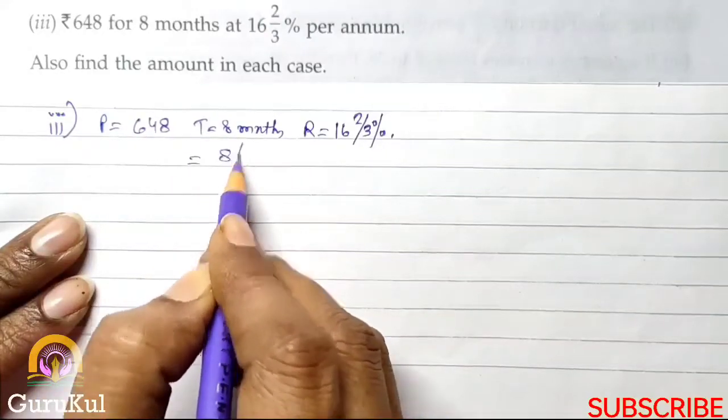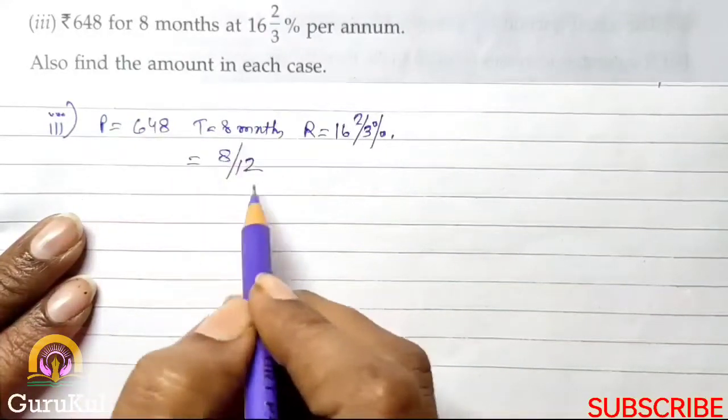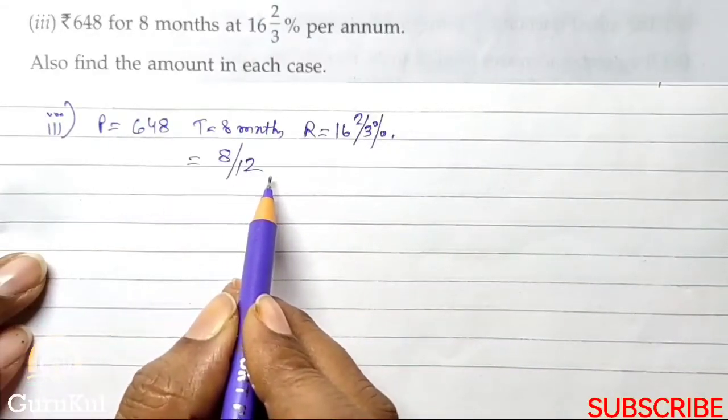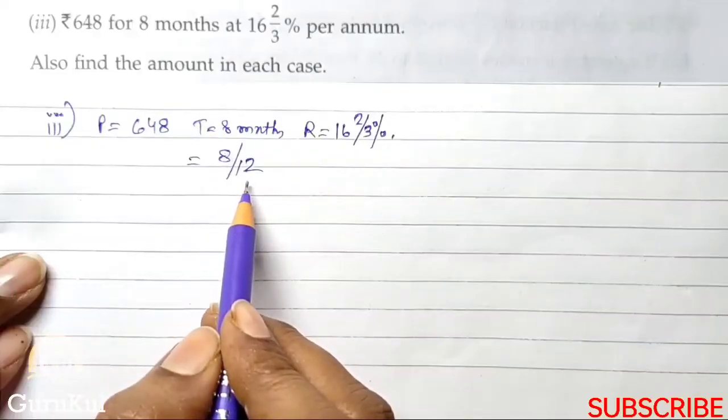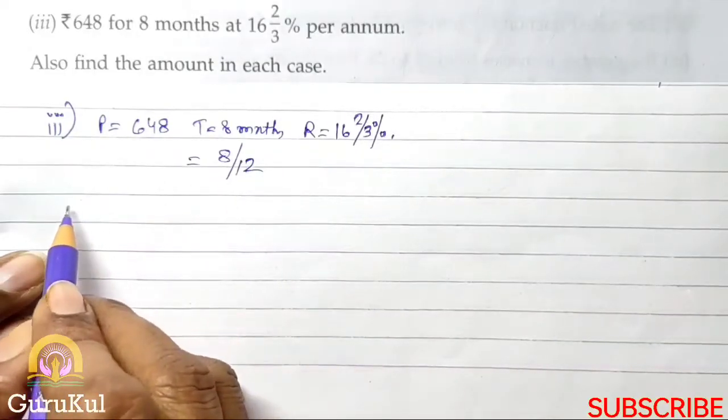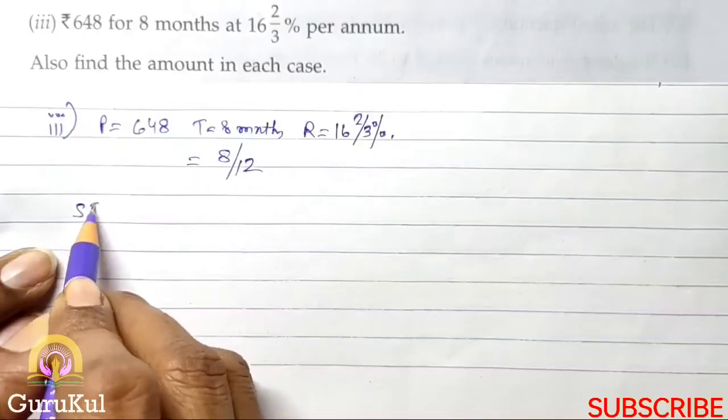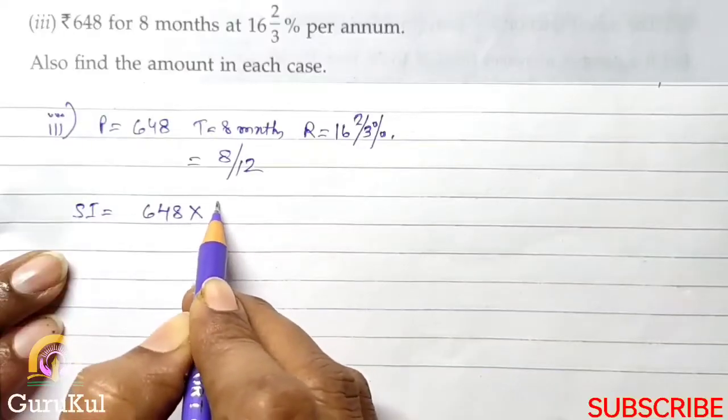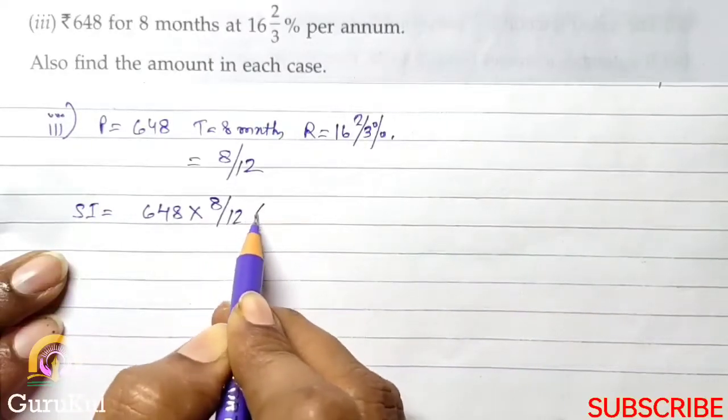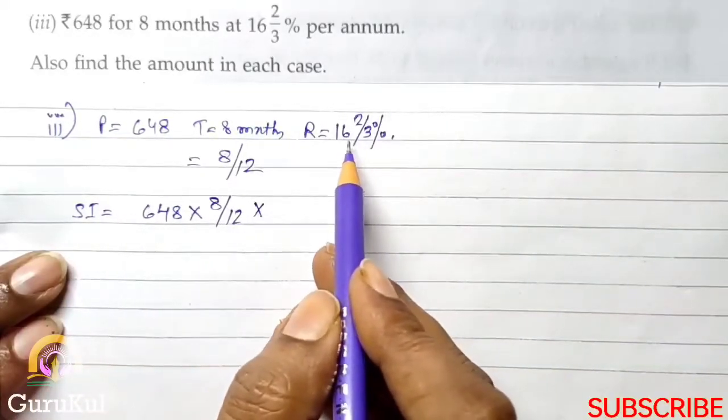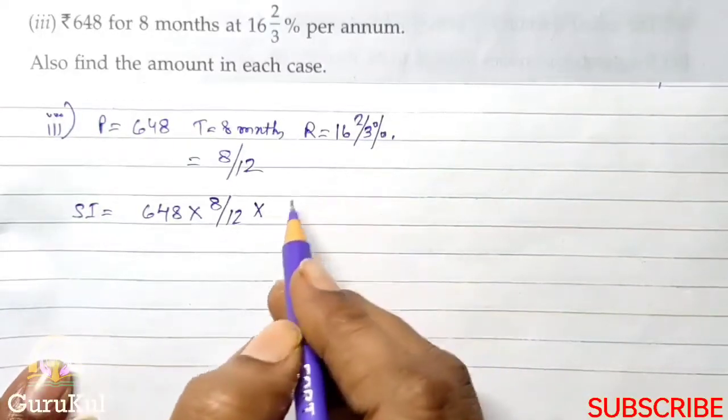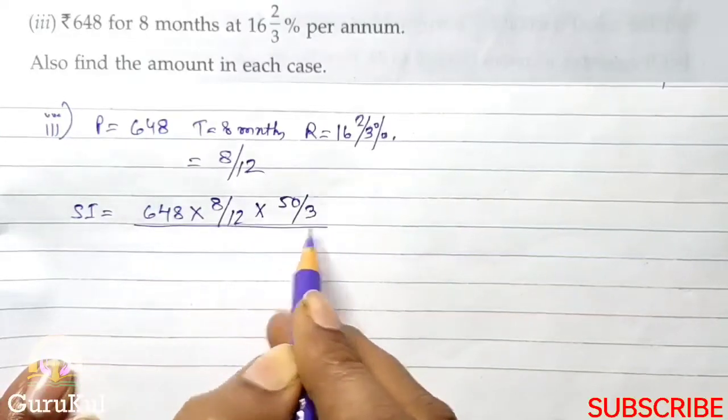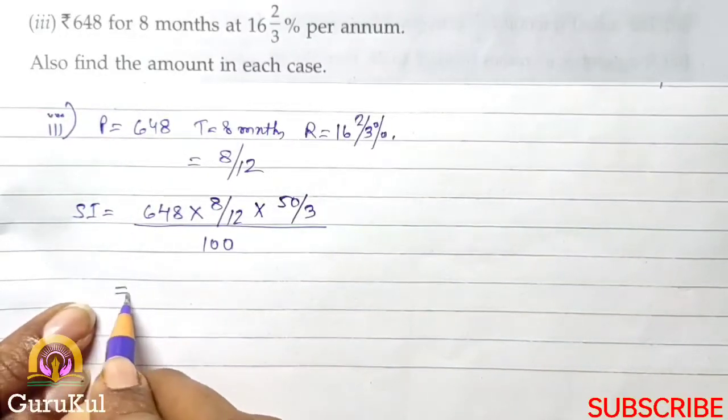So it becomes 8 by 12, in fraction form. 12 means 12 months make 1 year, that's why 8 by 12. So, now to find out interest what will we do? SI is equal to P into T into R. R value in proper form becomes 50 by 3 by 100.